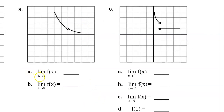Number 8, part A: the limit as x approaches 1. Here is an x value of 1. As we approach 1 from the left we are approaching a y value of 1. As we approach 1 from the right we approach a y value of 1. Therefore the overall limit as x approaches 1 is 1. For part B, what about the limit as x approaches 0? As we approach 0 from the left we are approaching a y value of 2. As we approach 0 from the right we approach a y value of 2. Therefore the overall limit as x approaches 0 is 2.